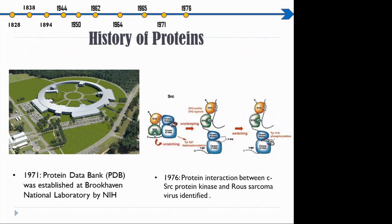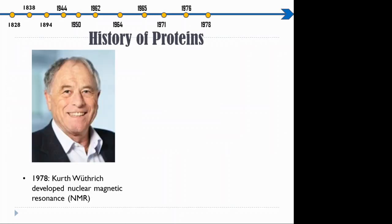In 1976, the first protein interaction was carried out between c-SRC kinase and Rous sarcoma virus. This was the first PPI interaction ever to be observed. In 1978, there was another breakthrough with the development of NMR or nuclear magnetic resonance. Kurt Wüthrich developed NMR, which was an alternative to X-ray diffraction. Both NMR and XRD proved useful in determining the three-dimensional structures of proteins.